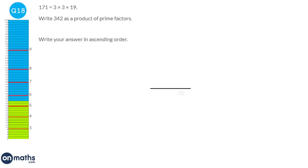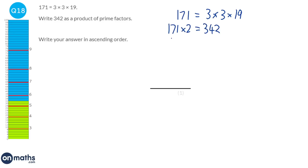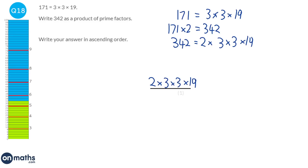We know that 171 is 3 times 3 times 19. Comparing 171 with 342, we know 171 times 2 is 342. So 342 has the same prime factors as 171 plus a factor of 2. The answer is 2 times 3 times 3 times 19.